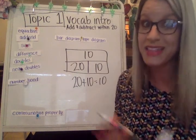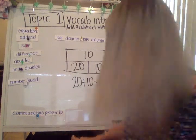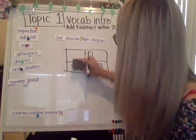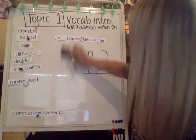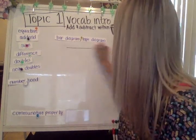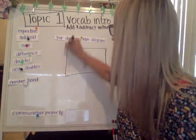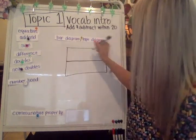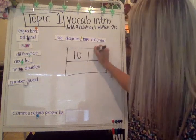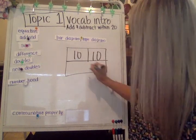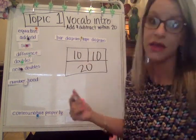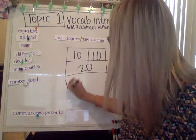Because essentially what you would be telling me is that 20 plus 10 equals 10, which we know is absolutely not correct. You use this bar diagram to show an equation, so you want your equation to be true.